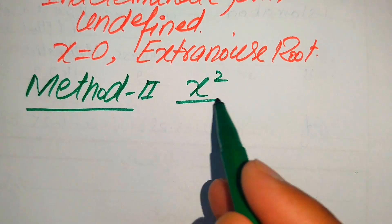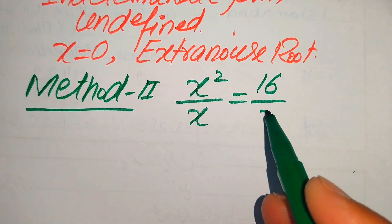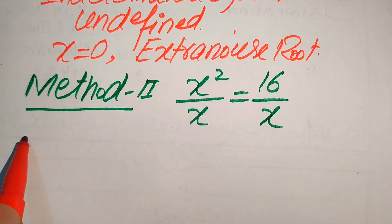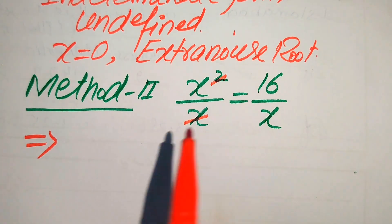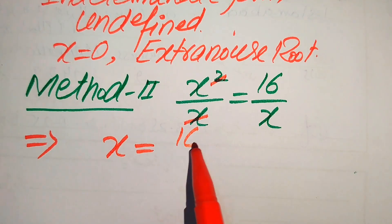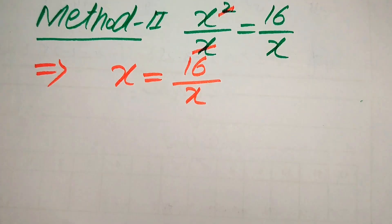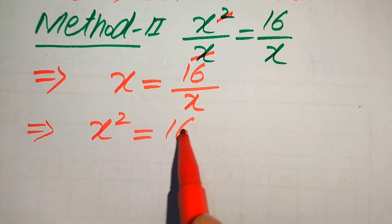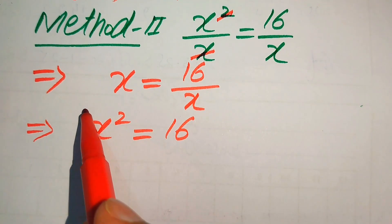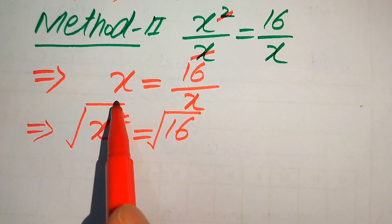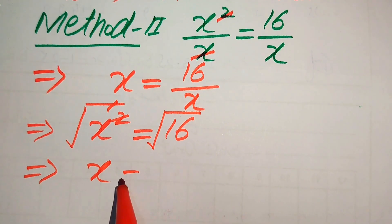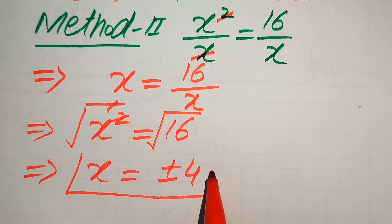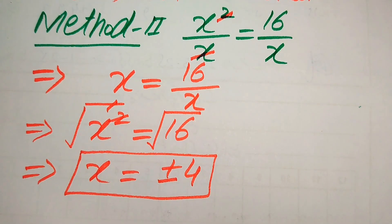In the second method, we again start with x squared over x equals 16 over x. On the left-hand side, x cancels with x, giving x equals 16 over x. Moving x to the right-hand side gives x squared equals 16. Taking the square root of both sides, we get x equals plus or minus 4 — the same two solutions verified in Method 1.